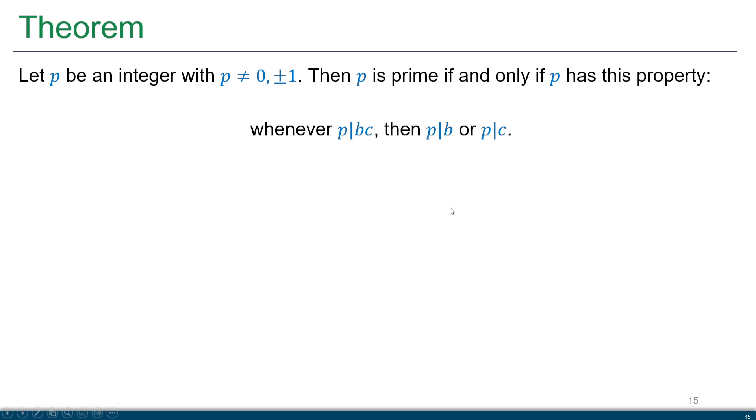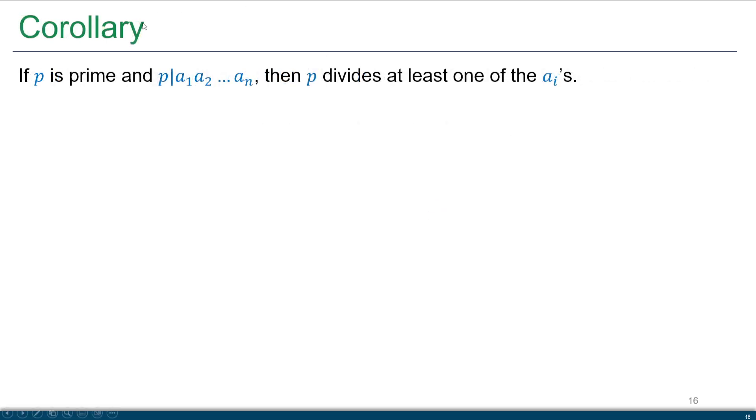So this gives us a way of being able to determine when something is in fact a prime. Now, we can extend this idea, which is what the corollary is going to do. So the corollary is if p is a prime and p divides a product of things, so we're going to say it divides a product of a1 all the way up to an, then p divides at least one of the ai's. It can divide more than one of them, but it has to divide at least one of them there.